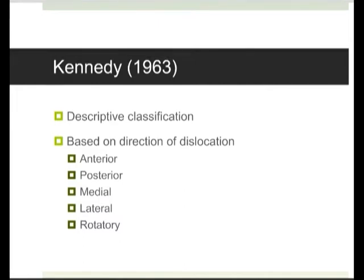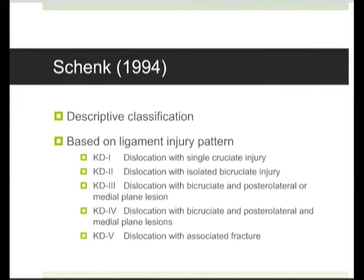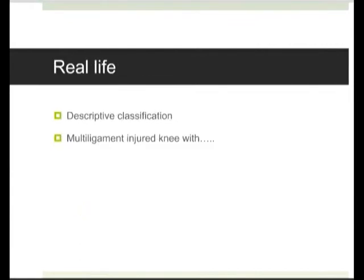The other thing I found while looking through the journals was the SOFCOT classification. It's from a French trauma group and they've got a prospective multi-centre series of knee dislocations. At the time of publishing they had about 67 dislocations and they call it a physiopathological — which I assume is a pathophysiological — classification, which describes simple pure single cruciate lesions or combined lesions.